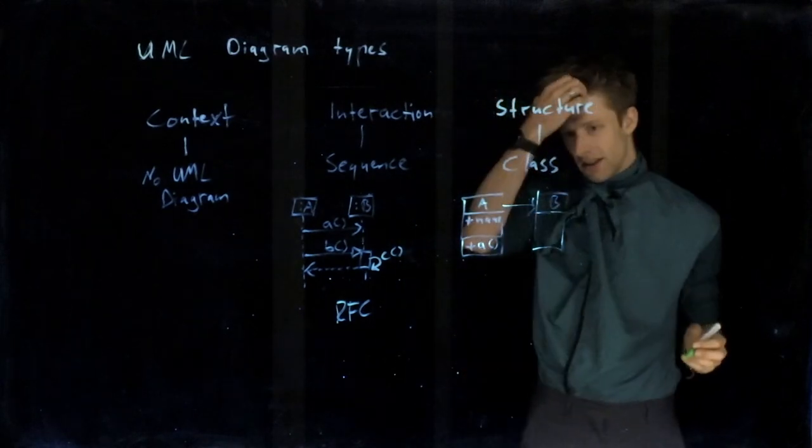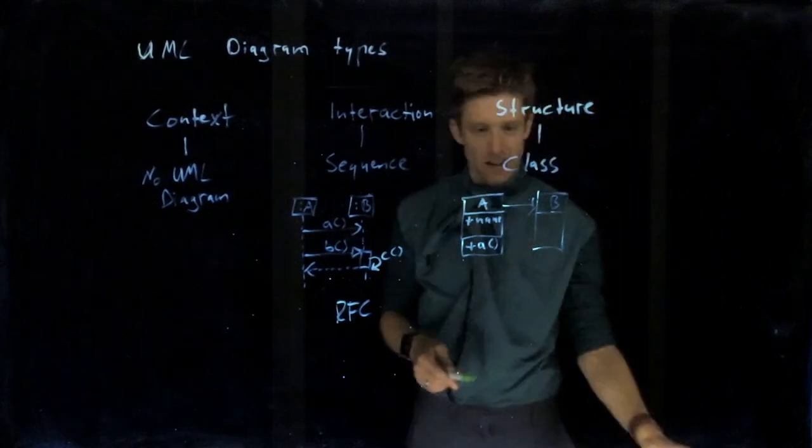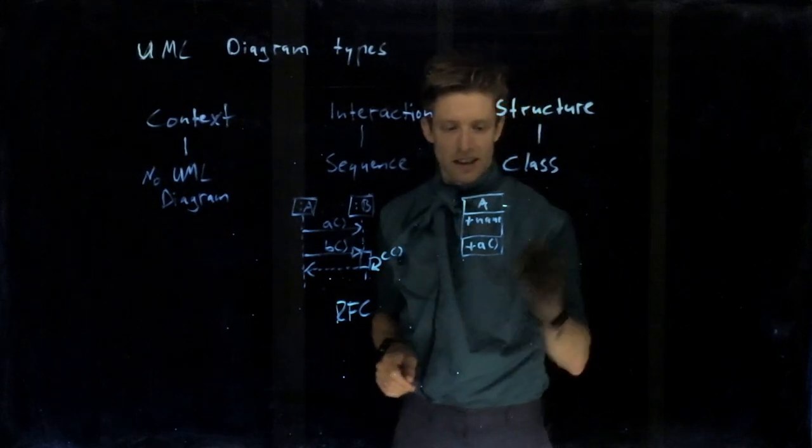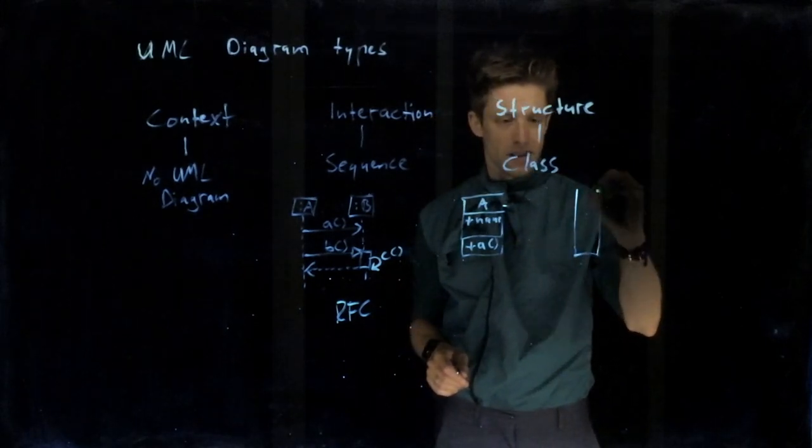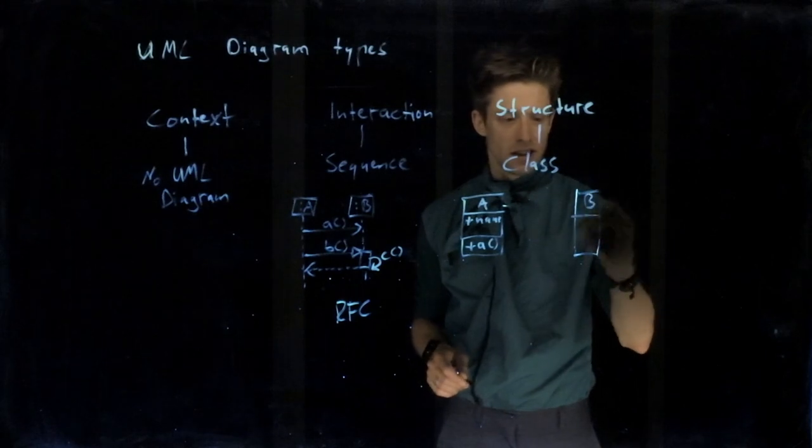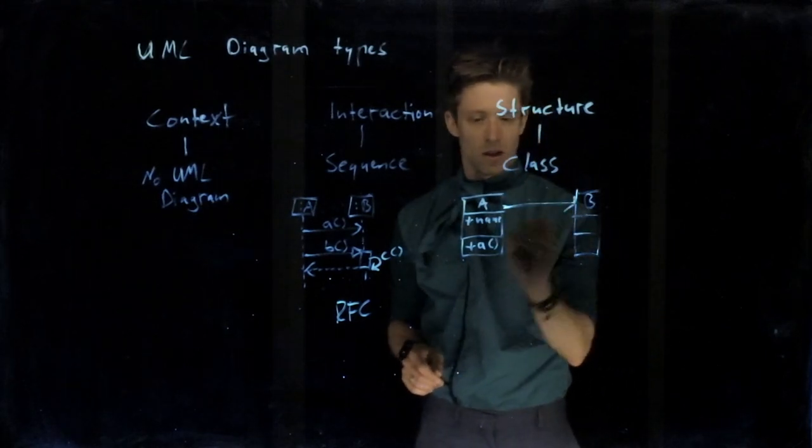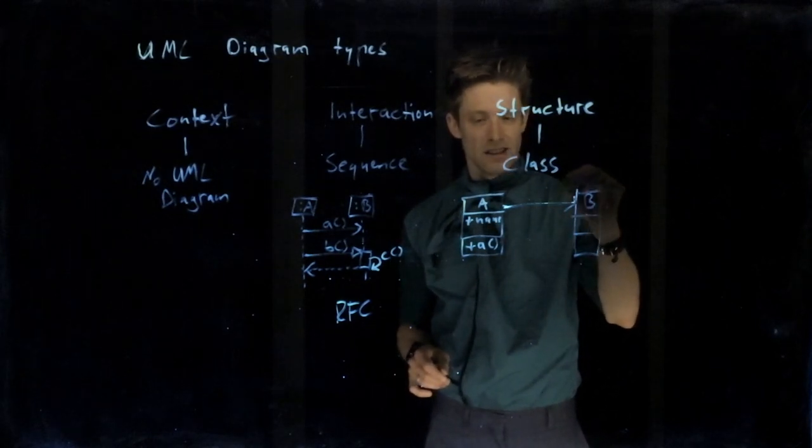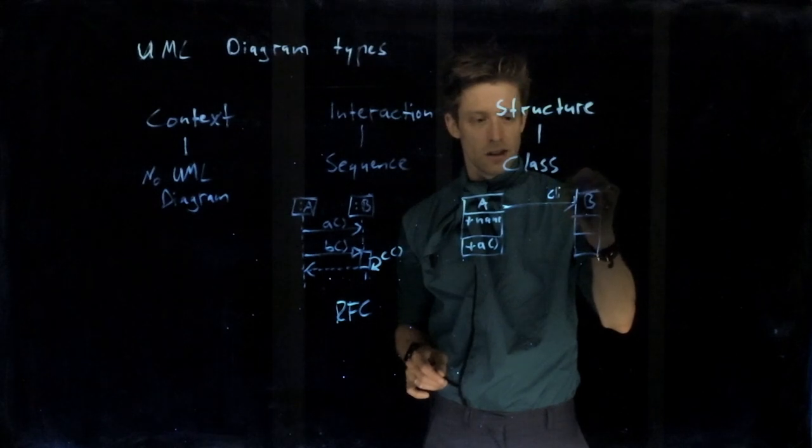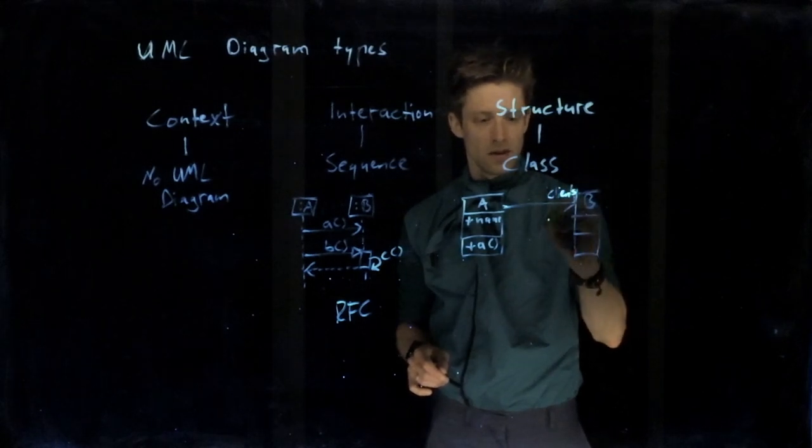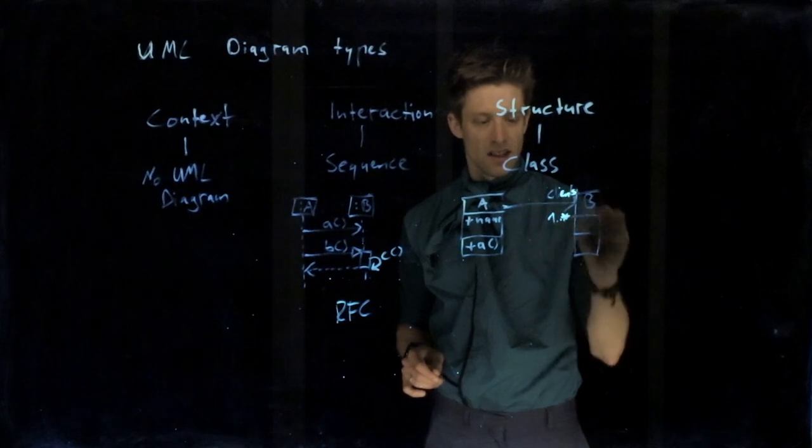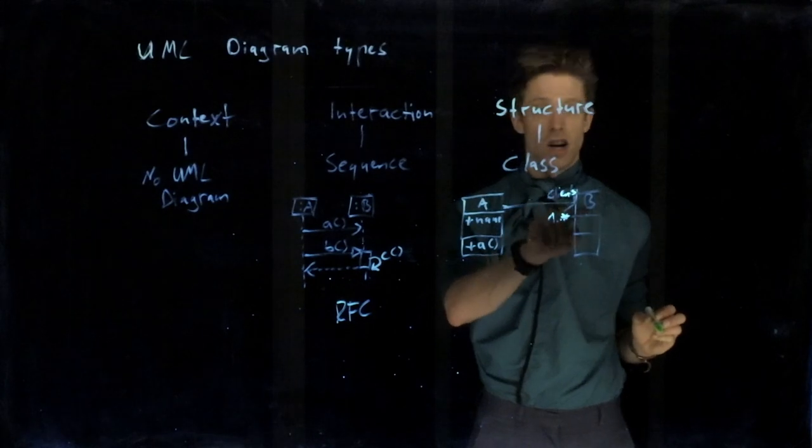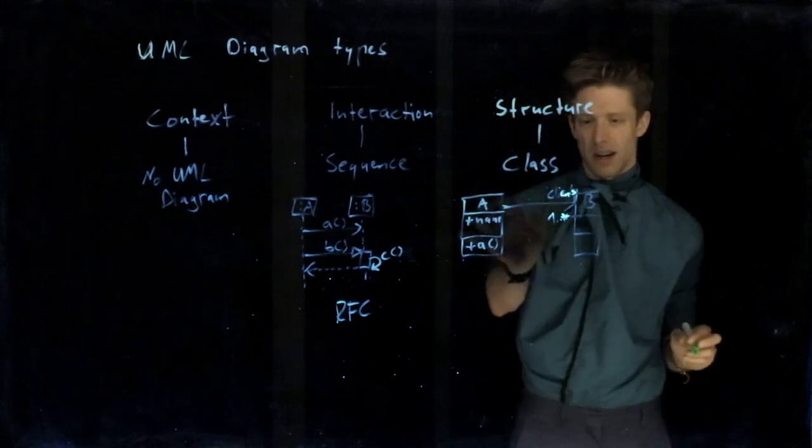There is something that I would like to mention here in detail, because I've seen it being forgotten very often, and that is the multiplicities and role names between different classes. You always read from the start of the arrow to the end. If I, for example, say clients one dot dot star, this means A has one to many clients that are of type B.